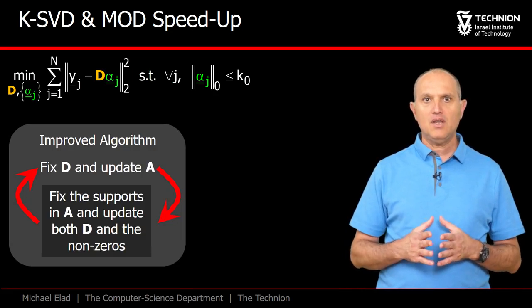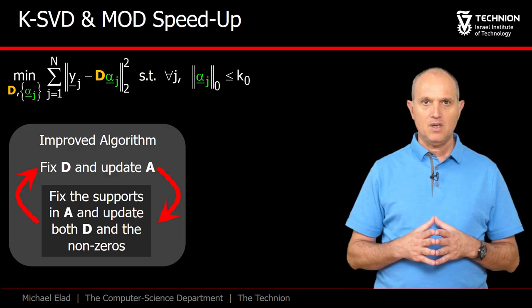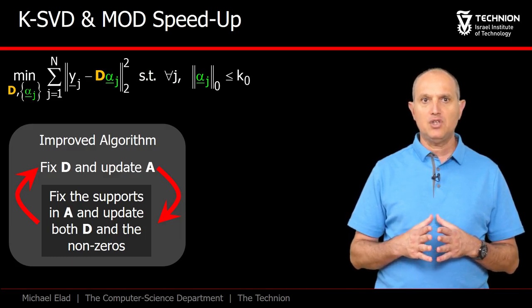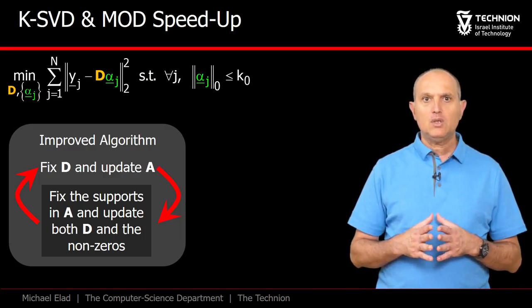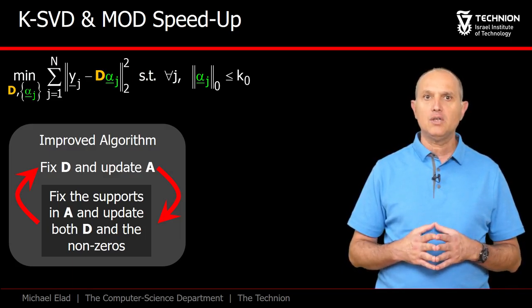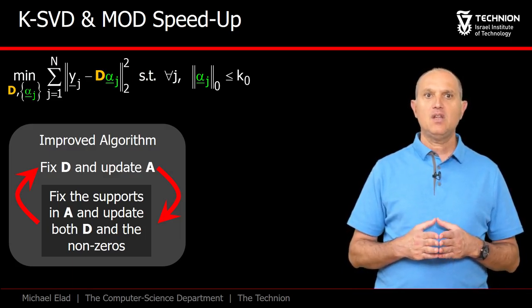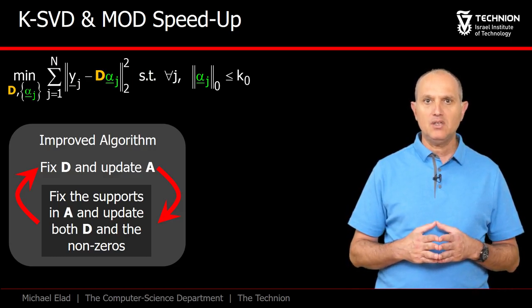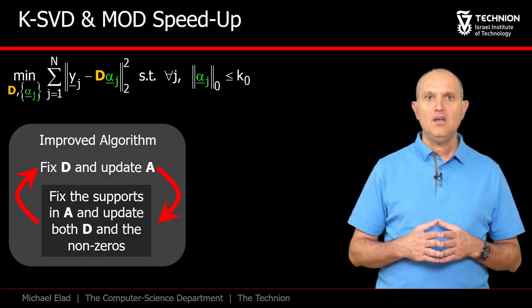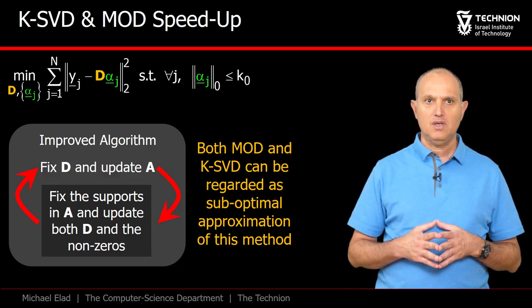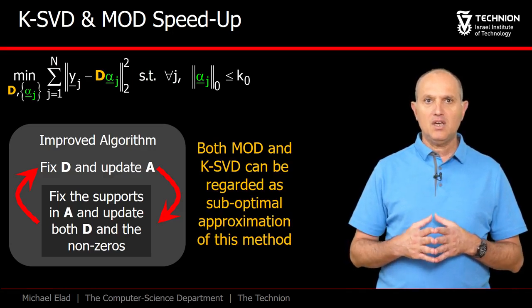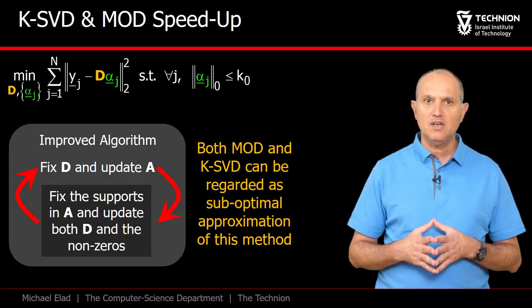It turns out that there is a way to speed up both these methods. The rationale is this. In the stage we have referred to as the dictionary update stage, what we should really do is to update both D and all the non-zeroes in A. This means that the information passing from the sparse coding stage is only the location of the non-zeroes. Indeed, both the MOD and the KSVD can be considered as approximations of this idea.